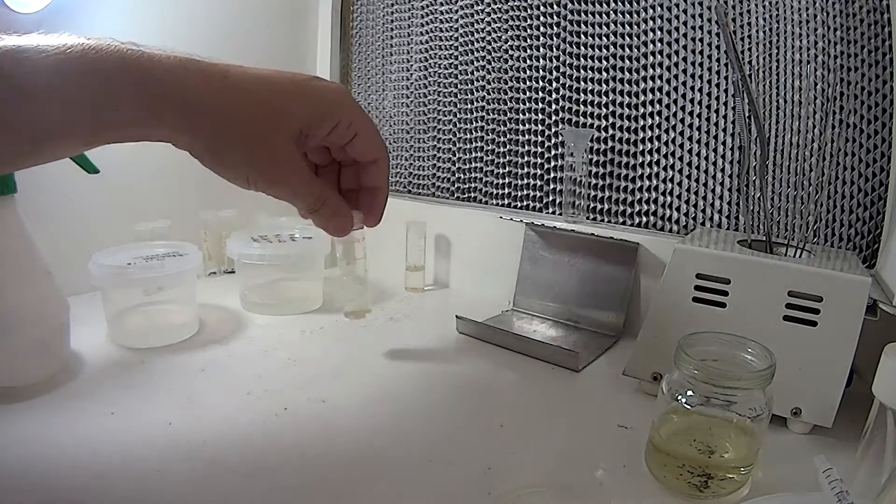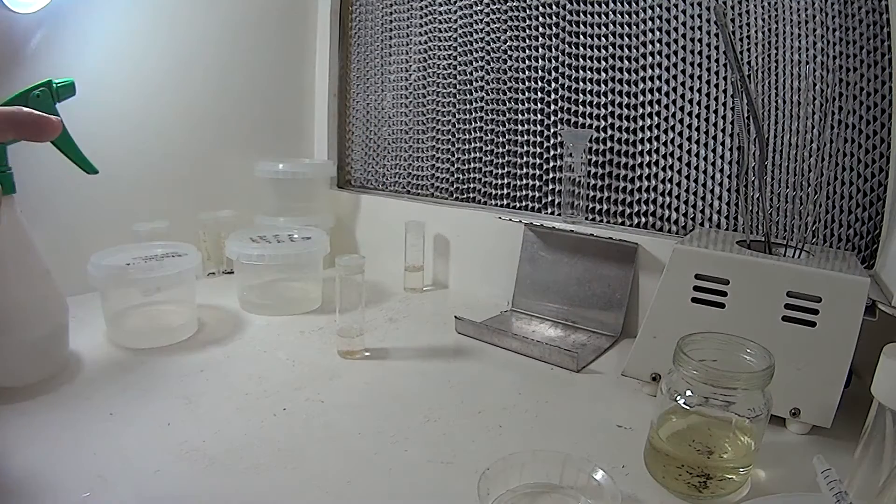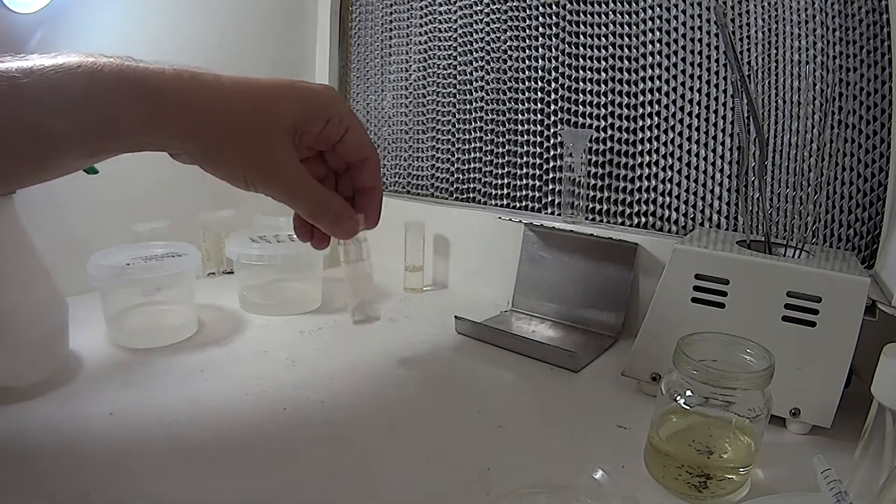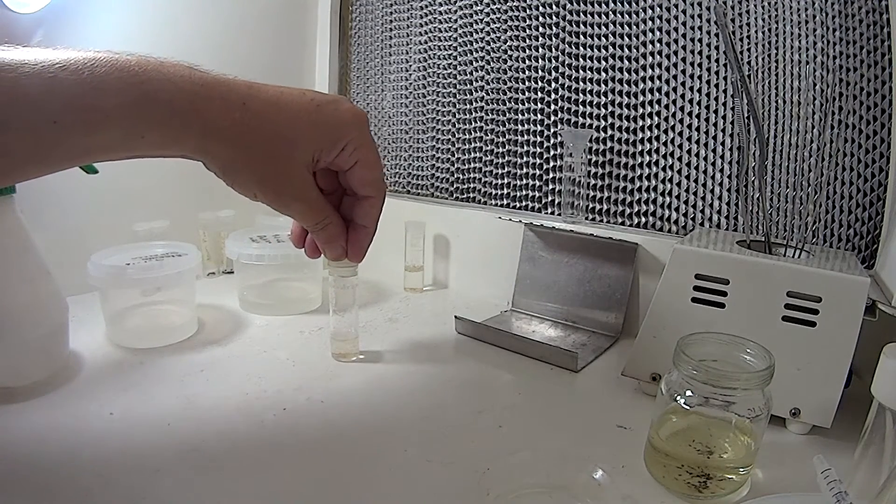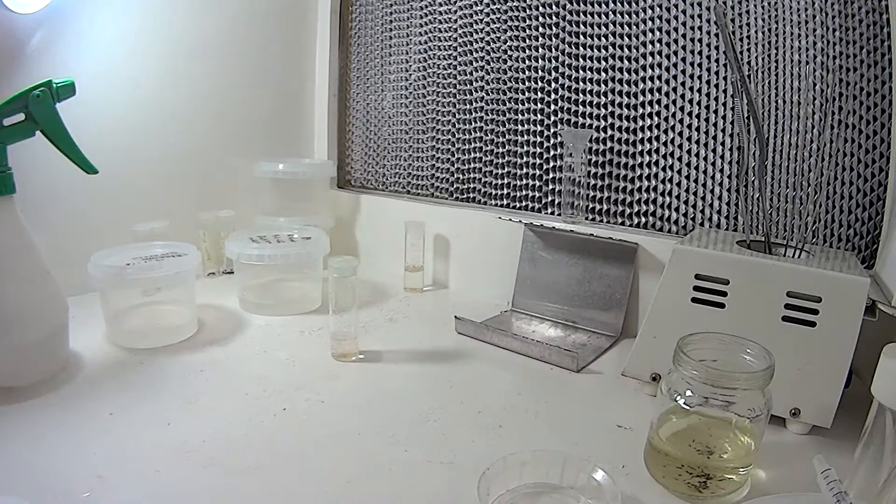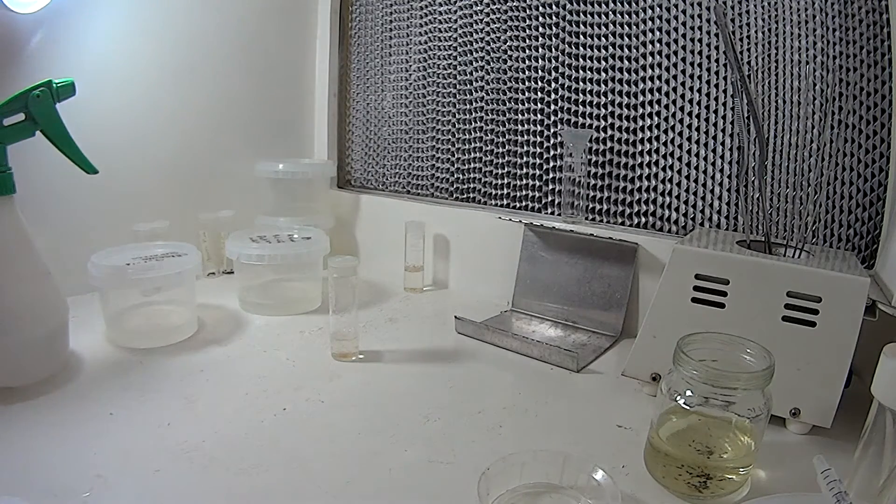But what I've done now is, we've got some orchid seed in plant preservative mixture sterilization solution. That solution is 2 mls of plant preservative mixture with 50 mls of media. There is instructions on how to make this sterilization solution up on one of the other videos.